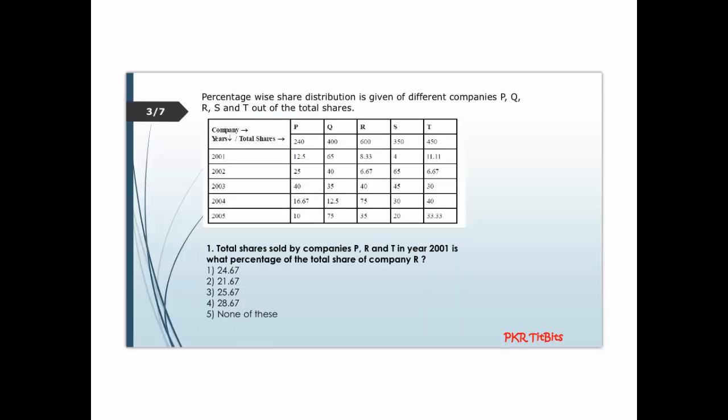The percentage-wise distribution is given for different companies P, Q, R, S, and T out of total shares. These are the companies and their total shares from 2001 to 2005.